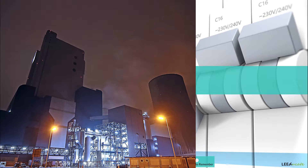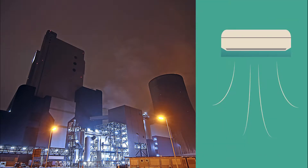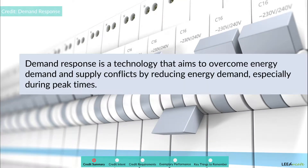Think about a power plant that serves the whole city, and imagine that the weather gets extremely hot beyond the normal average. As a consequence, everyone simultaneously turns on his or her air conditioner, creating a sudden increase in electricity demand. If the power plant's energy is not enough to handle that peak demand, the utility company would think about constructing an additional plant or finding additional generation sources, including non-renewable energy sources. Demand response is a technology that aims to overcome these types of conflicts by reducing energy demand, especially during peak times.